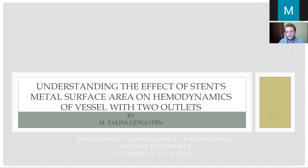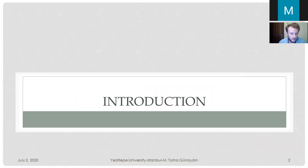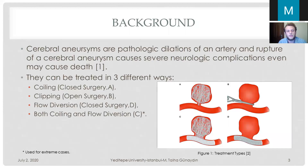At the beginning, I would like to start with some background information. First of all, what is a cerebral aneurysm? Cerebral aneurysms are pathological dilations of an artery, and the rupture of a cerebral aneurysm causes severe neurological complications; in some cases it may cause death. There are three different ways to treat a cerebral aneurysm: coiling, clipping, and flow diversion. For extreme cases, both coiling and flow diversion methods are used. In this study, I focus on the flow diversion process.